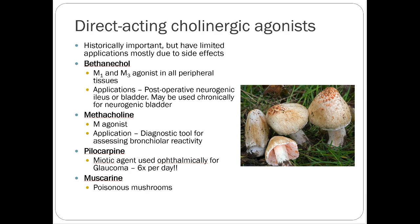Moving into drugs — direct cholinergic agonists really don't have much role in therapy. We don't really want to cause SLUD-type effects, and most patients would be so uncomfortable from direct cholinergic effects that they wouldn't tolerate whatever therapeutic benefit you're trying to achieve. There are some drugs in this area but they're mostly of historical interest. There are some ophthalmic applications — pilocarpine is a miotic agent that can be used for glaucoma — and we use some drugs in procedural settings, but we'll get into that more in the ophthalmic agents lecture.